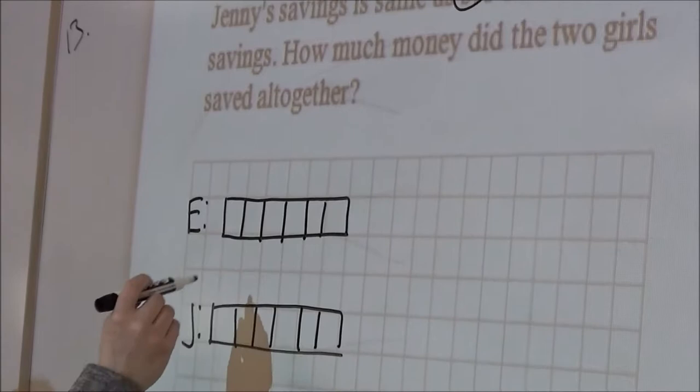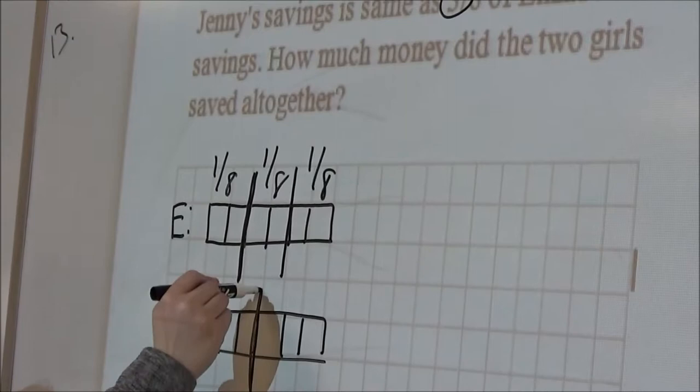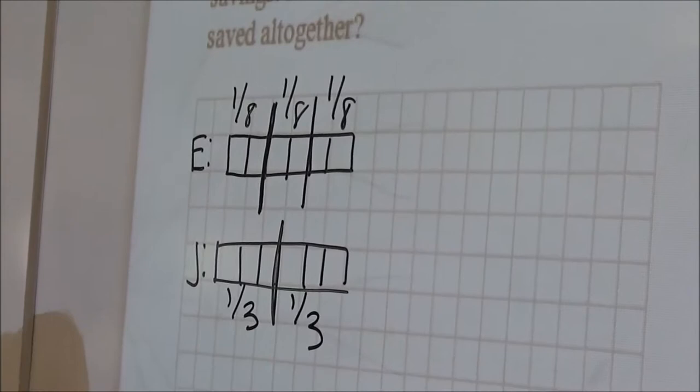So two-thirds of Jenny's savings is the same as three-eighths of Elizabeth's. So for Elizabeth's, we'd go for her three-eighths, and we divide the six into three parts. For Jenny's, we divide it into two parts because hers is two-thirds, and each part would be one-third.